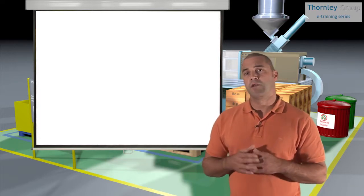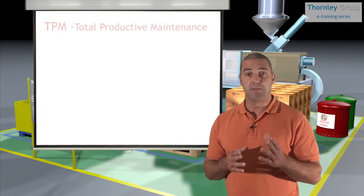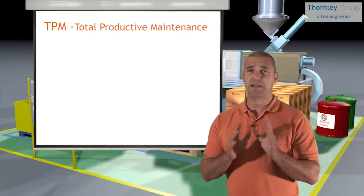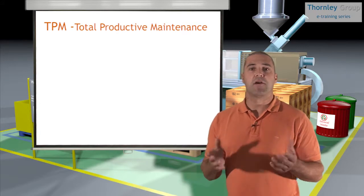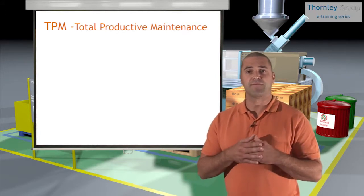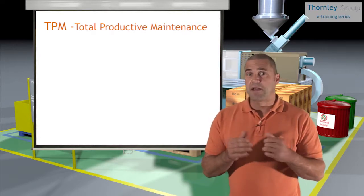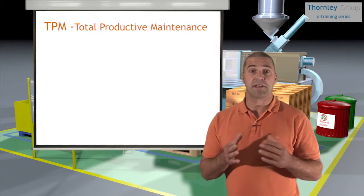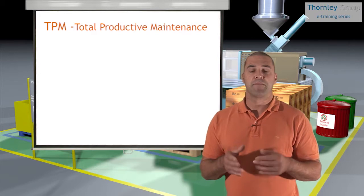Another toolset we can use to help prevent barriers to flow is TPM — Total Productive Maintenance. Please don't confuse TPM with asset sweating or any other tool that suggests we should have equipment working at full capacity as constantly as possible. That might be an aim if we have unlimited demand and our equipment is the rate-limiting step in meeting that demand, but this just misses the point of TPM.